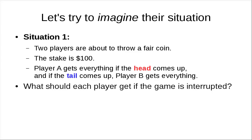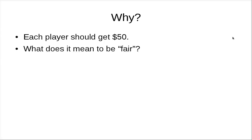Let's try to be concrete. Imagine this is one situation: you have two players and they are about to throw a fair coin. The stake is $100, and they made up this rule — Player A gets everything if heads comes up, and if tails comes up, Player B gets everything. So what should each player get if the game is interrupted? You can guess that each should get $50. But what does it mean to be fair in this case?